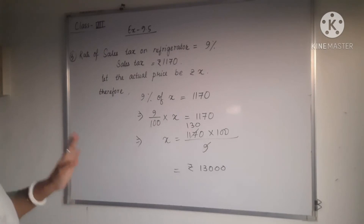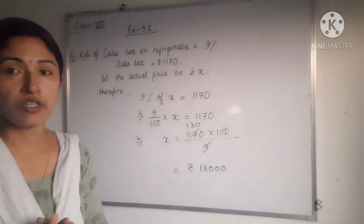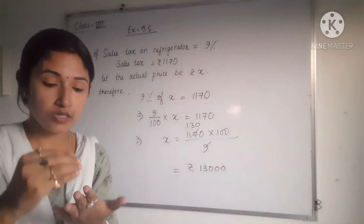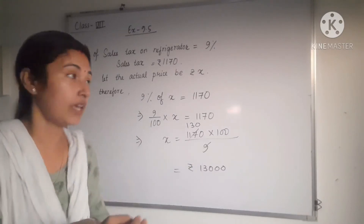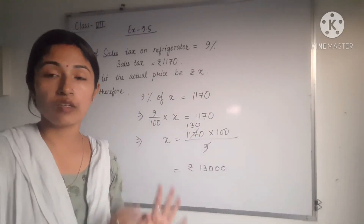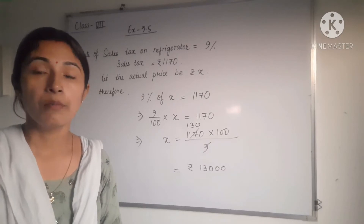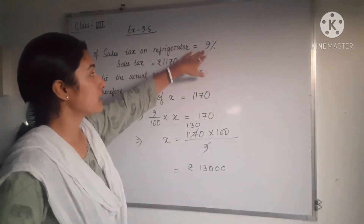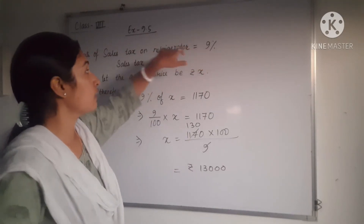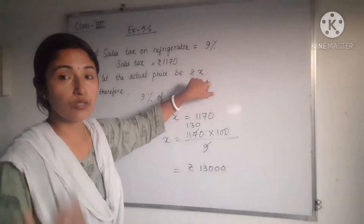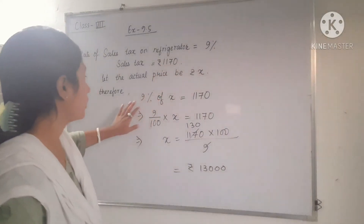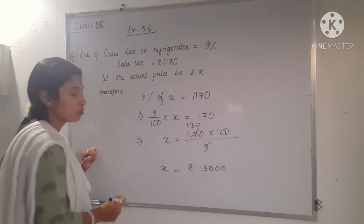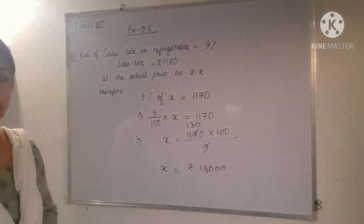In question number three, the rate of sales tax on a refrigerator is 9% and the sales tax amount is rupees 1,170. We need to find the actual price of the refrigerator. Taking the actual price as rupees X, we write: 9% of X = 1,170. Solving this, we get X = rupees 13,000, which is the actual price of the refrigerator.